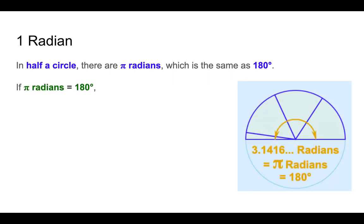If pi radians is equal to 180 degrees, then one radian is 180 degrees divided by pi. That comes out to be about 57.2958 degrees. So radians and degrees both measure angles. Just like centimeters and inches both measure length, it's the same idea. These are two different types of measurements for angles.